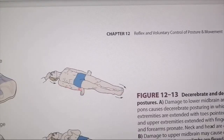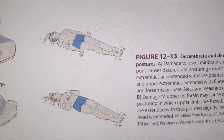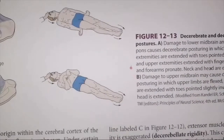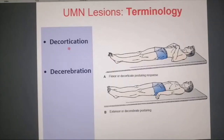This is decerebration. However, if you look at this — this is decortication. Tapping the forehead, the patient has flexed his upper arms while the remaining extension is still there. Now you know the broad differences between decortication and decerebration, and you also see the value of clinical examination in locating a deep-seated lesion inside the CNS.